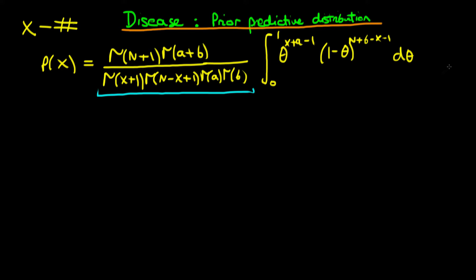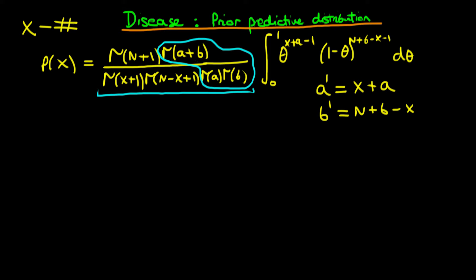And then we had an integral over theta. If we look at the second part here, it looks quite similar to a beta function, except it's a beta function with now a new parameter a, which I'm going to call a primed, which is equal to x plus a, and a new parameter which I'm going to call b primed, which is just n plus b minus x. It looks like that in terms of the theta part, but it doesn't have any of the first part of it. Because remember that for a beta distribution with parameters a and b, we have gamma of a plus b divided through by gamma of a times gamma of b. So we don't have that, but what we can actually do is multiply this expression through by this, and so long as we divide through by it afterwards, we haven't done anything to our expression overall. So equality holds, but we can get something which looks like a beta distribution.